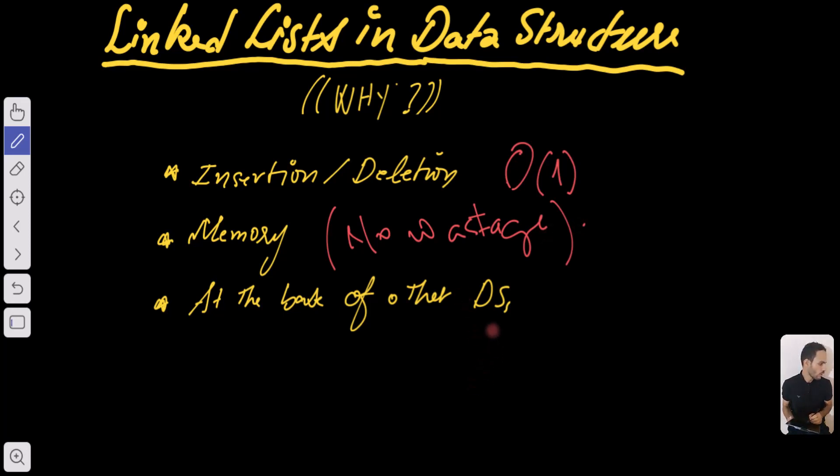And the last point about why would you use linked lists is that they are at the base of other data structures for example trees and graphs.